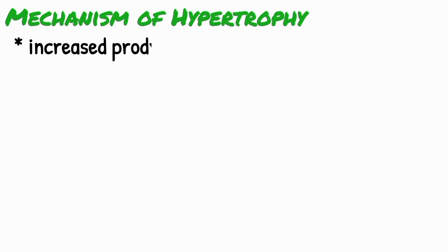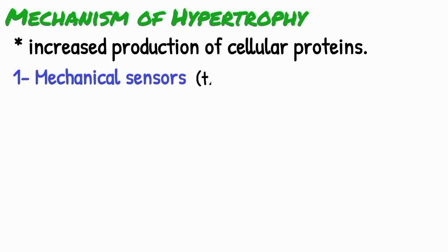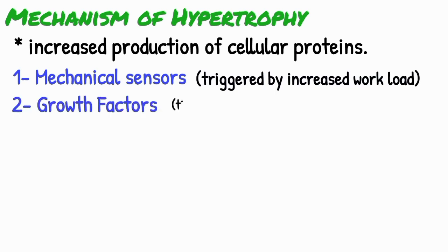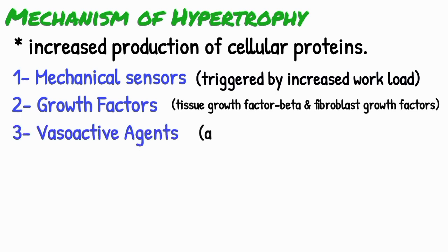Hypertrophy is the result of increased production of cellular proteins. Hypertrophy can be induced by the linked action of mechanical sensors that are triggered by increased workload, growth factors such as transforming growth factor beta and fibroblast growth factors, and vasoactive agents such as alpha-adrenergic agonists.